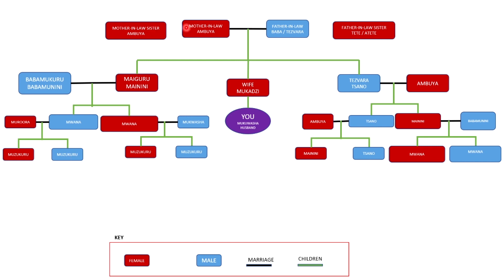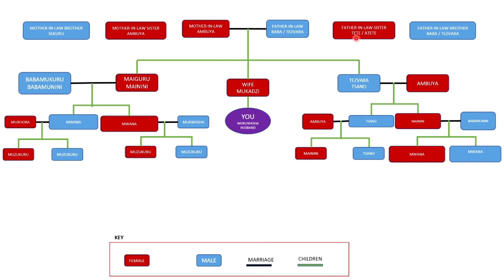Now going to the top of the chart: your wife's mother's sister, you also address as Mbuya. And your wife's mother's brother, you address as Sekuru. Going to your wife's father's side — your wife's father's sister, you address as Tete or Atete. And your wife's father's brother, you address similarly to how you address your wife's father, which is Baba or Tezara.